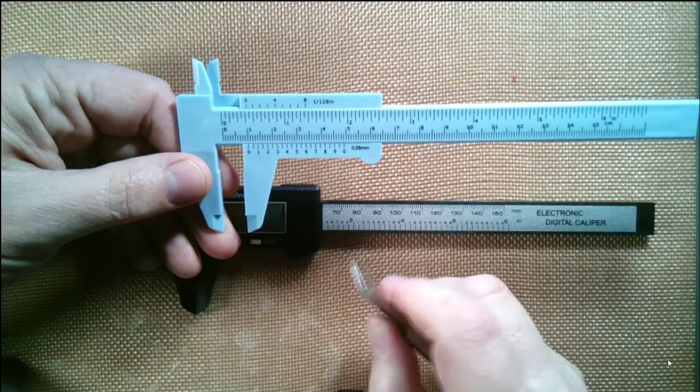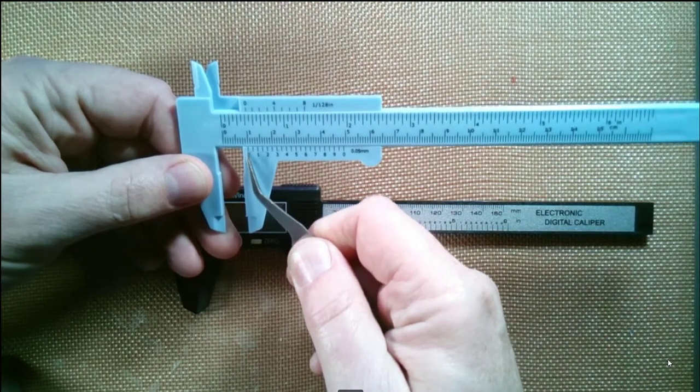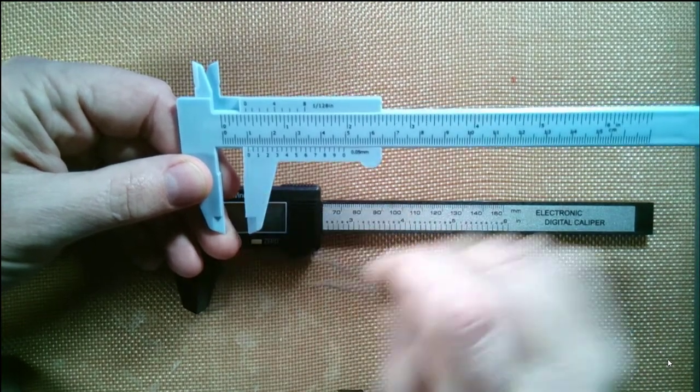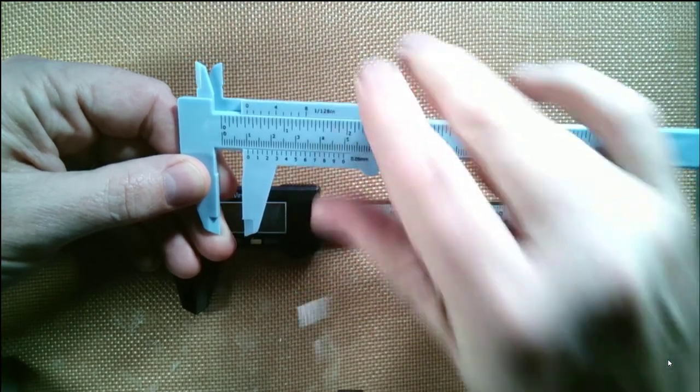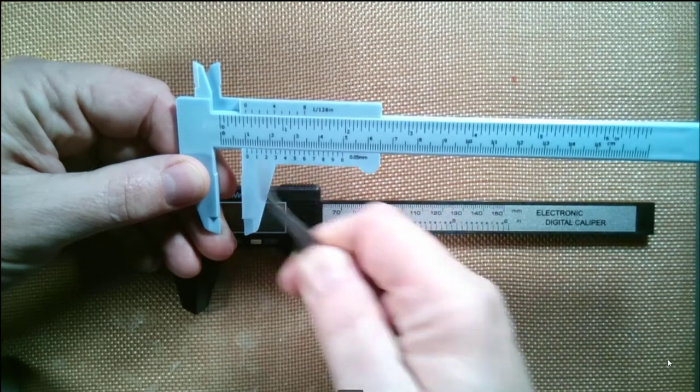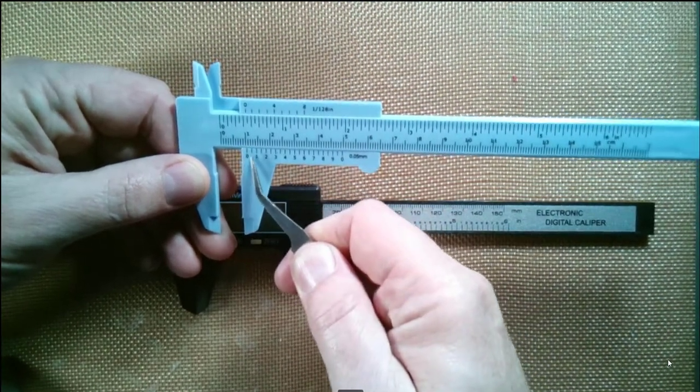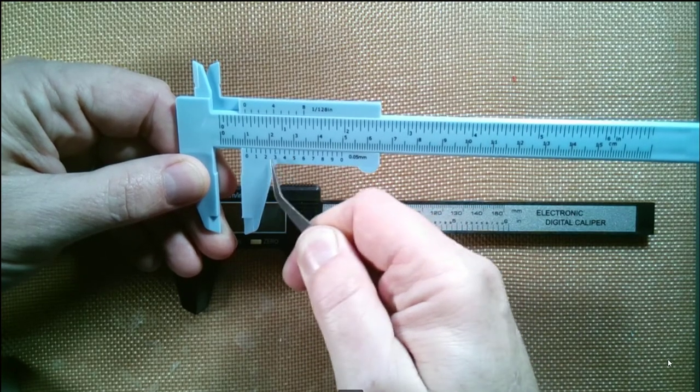But what if it's like 10 and a half or 10 and a bit more? Then you look at this bottom row—that's still 10 millimeters plus. You look for the number down here and see where it lines up on the bottom exactly with a hash mark on the top. In this case, this five lines up exactly with one of these hash marks, so that would be 10.5 millimeters.